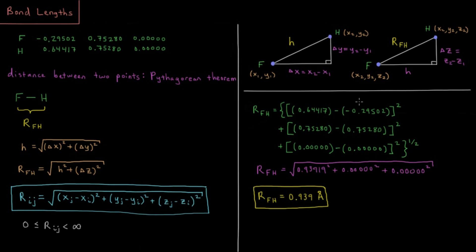Then we square, take the difference and square each of those values. We get 0.93919 squared plus 0 squared plus 0 squared. These two terms don't contribute anything, so we're just taking the square root of this number squared, which gives us that the bond length in this case between fluorine and hydrogen is 0.939 angstroms.